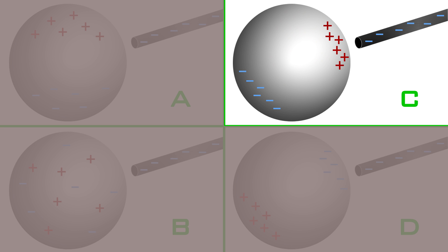Note that the charges can move on the metal sphere because it is a conductor and that the negatively charged rod will cause the charges on the metal sphere to redistribute themselves, with like charges repelling each other and opposites attracting each other.